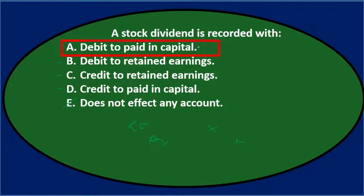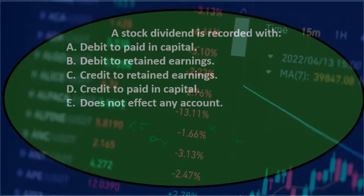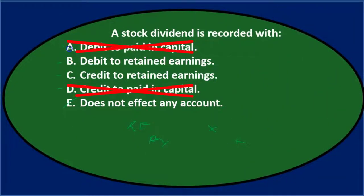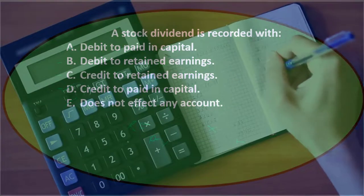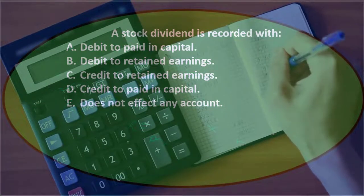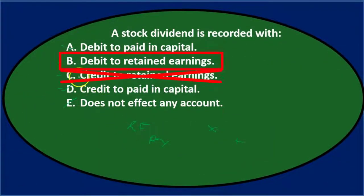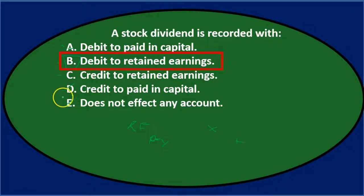That means it's not going to be paid-in capital — that's related to issuing stock, and it would be common stock anyway — so it doesn't look like A or D. We're left with B and C, which is retained earnings, and that makes sense. Retained earnings is a normal credit balance account; if we're paying out to owners it goes down, so we debit it. Final answer: B — a stock dividend is recorded with a debit to retained earnings.